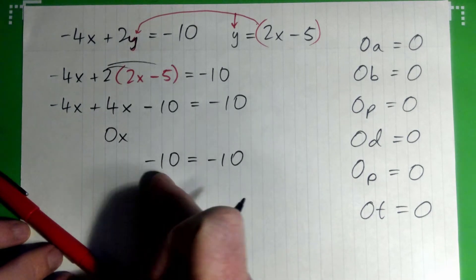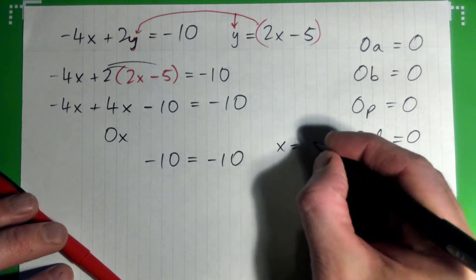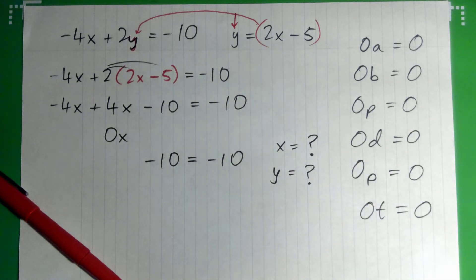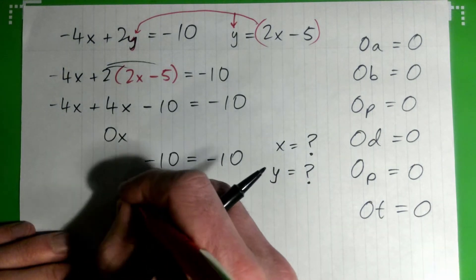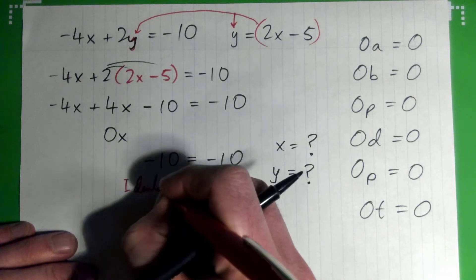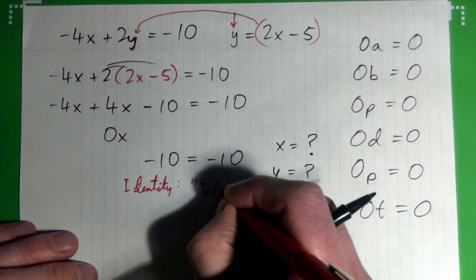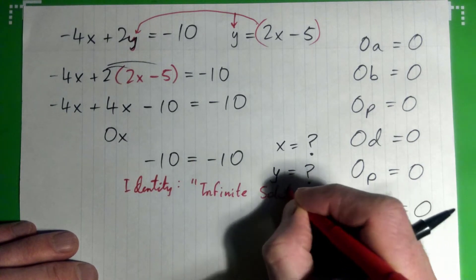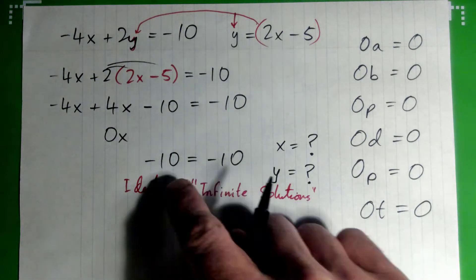We have a number on both sides and the variables have disappeared. We don't know what x and y equal — and that's exactly the problem. But mathematically, this is called an identity, and that implies there are infinite solutions.